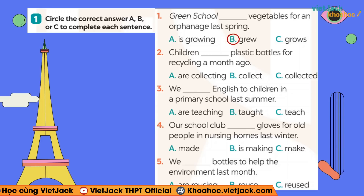Thì mình sẽ chọn collected: Children collected plastic bottles for recycling a month ago — bọn trẻ đã thu lượm những cái vỏ chai nhựa để tái chế vào một tháng trước. Number 3: dấu hiệu nhận biết là last summer. Vì vậy câu số 3 mình sẽ chọn là taught — quá khứ của từ teach thì là taught. We taught English to children in a primary school last summer — chúng mình đã dạy tiếng Anh cho các bạn nhỏ ở trường tiểu học vào mùa hè năm trước.